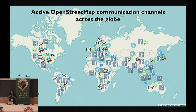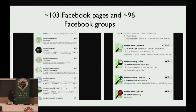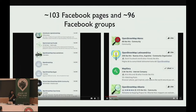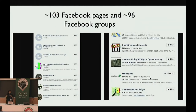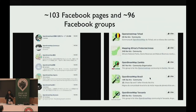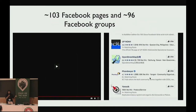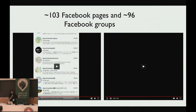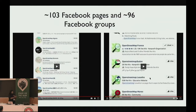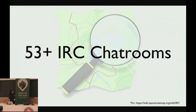I'm going to run through a few numbers I've got from the wikis. We have around 103 Facebook groups, 96 Facebook pages, which in a way are using OpenStreetMap in their communications. There are a bunch of them which are not active or have only one or two users, but they still exist, which is interesting. We have 53 plus IRC chat rooms — I'm not sure how many of them are active, but they do exist.